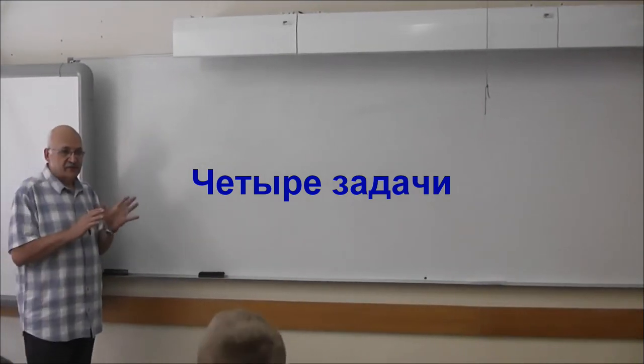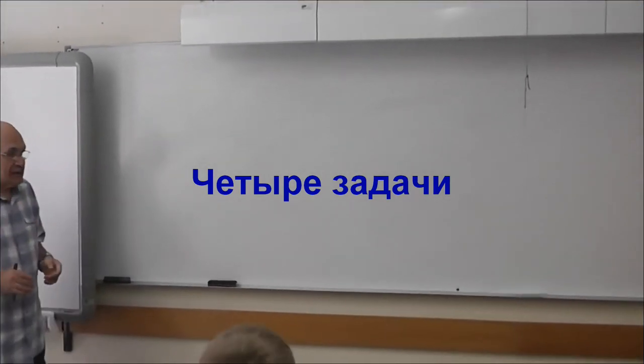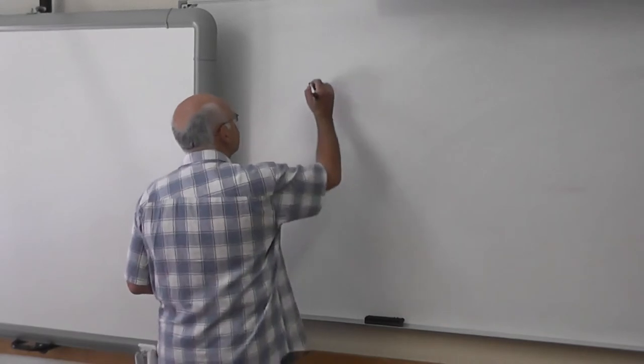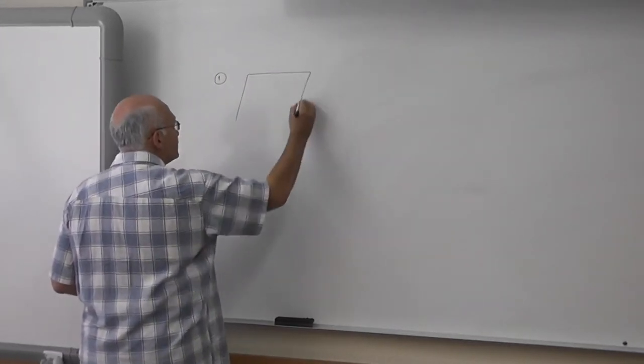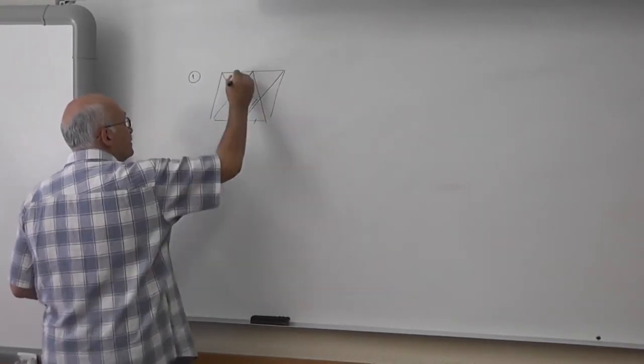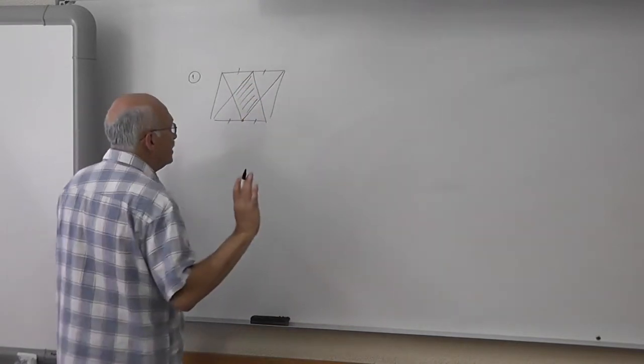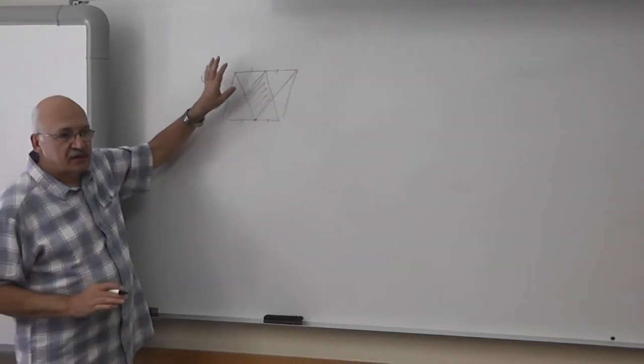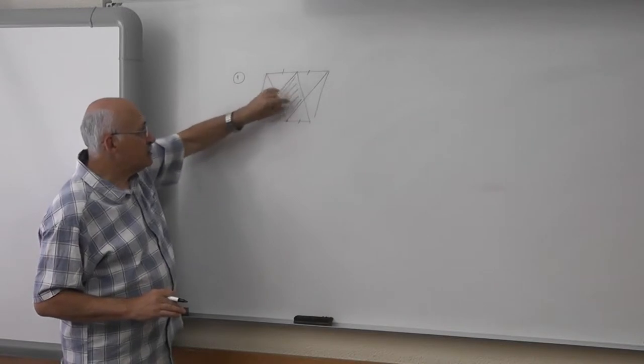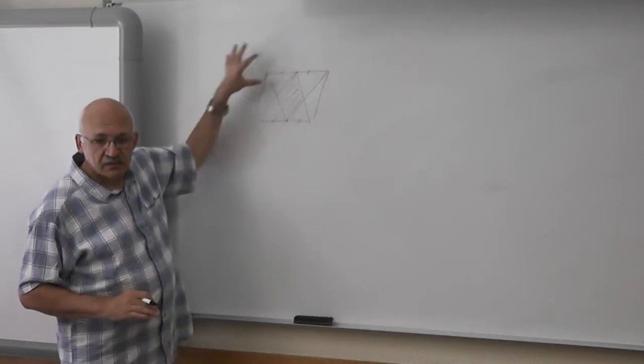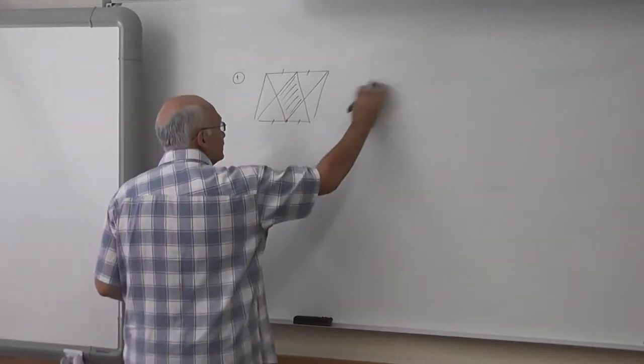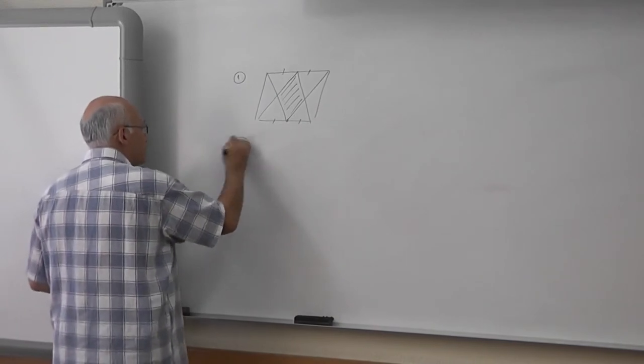You have to find the area of different shapes and you will use the technique that we have started. The first one is easy, just to warm up. So this is the parallelogram with midpoints, and everywhere the shaded area, you must find the ratio of the shaded area.